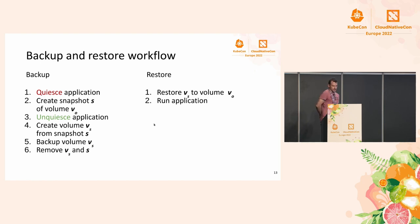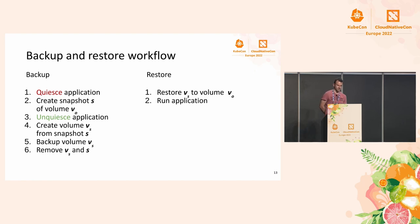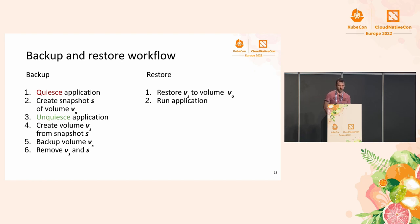Let's say we have a PVC with a Manila CFS share. How would we go about backing it up? This is the workflow we'd like to follow. It consists of six steps: quiescing the application, creating a snapshot, unquiescing, creating a volume from the snapshot, backing up this intermediate volume, and then removing it along with the snapshot. Let's break down those steps one by one.